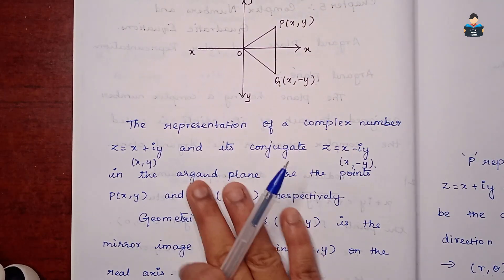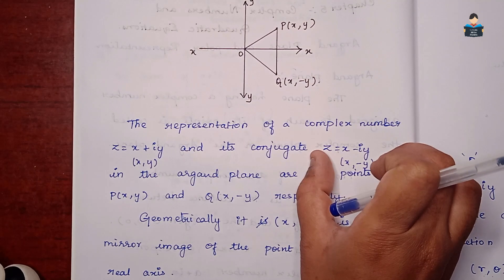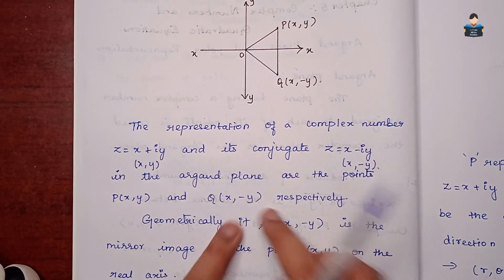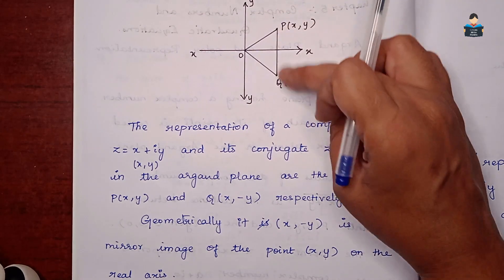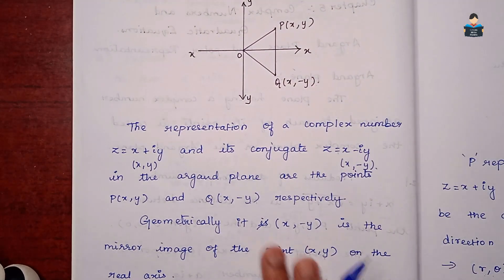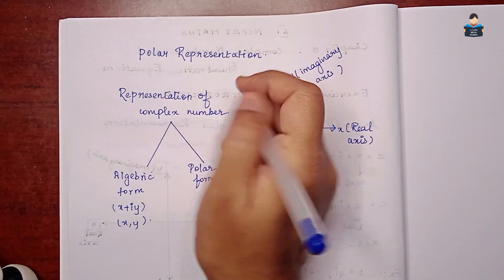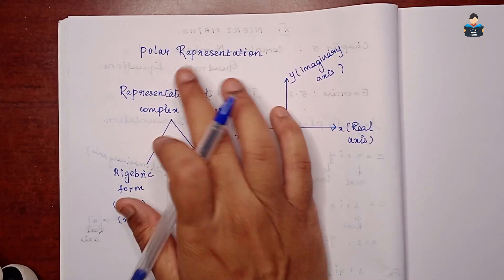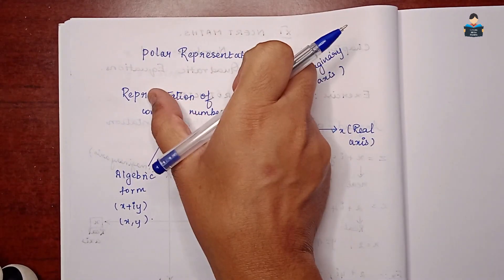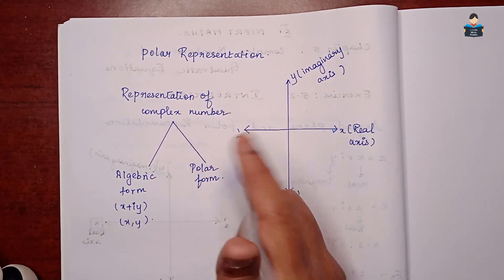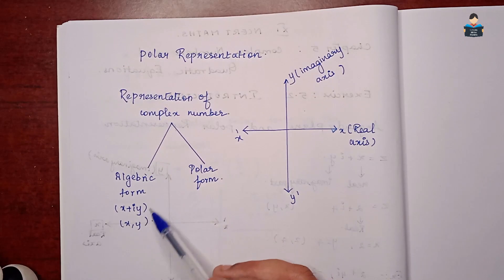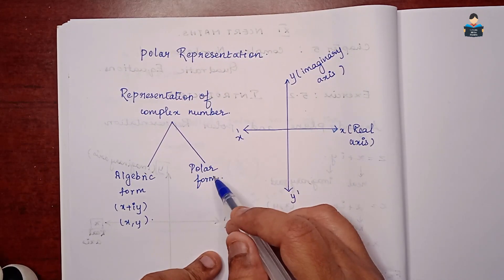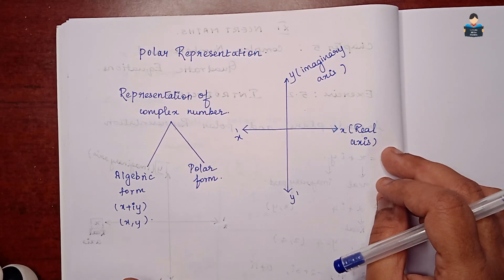So Q(x, -y) is the mirror image of P(x, y) on the x-axis. Next, let's look at polar representation. One form is the algebraic form, x plus iy, where we represent coordinates (x, y). The next is the polar form, and we will see how to represent the polar form.